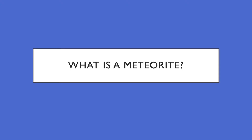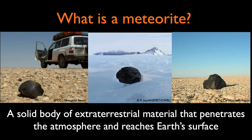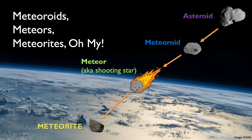So, what is a meteorite? A meteorite is defined as a solid body of extraterrestrial material that penetrates the atmosphere and reaches Earth's surface — essentially just a rock from space. Terminology is important when discussing meteorites. Depending on the physical location of that material, these rocks can be called something different.